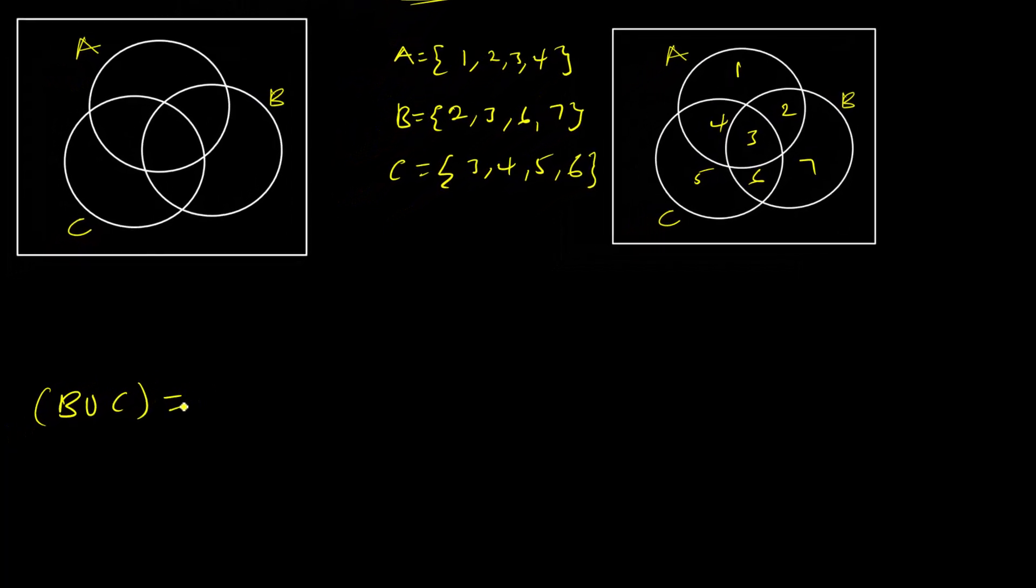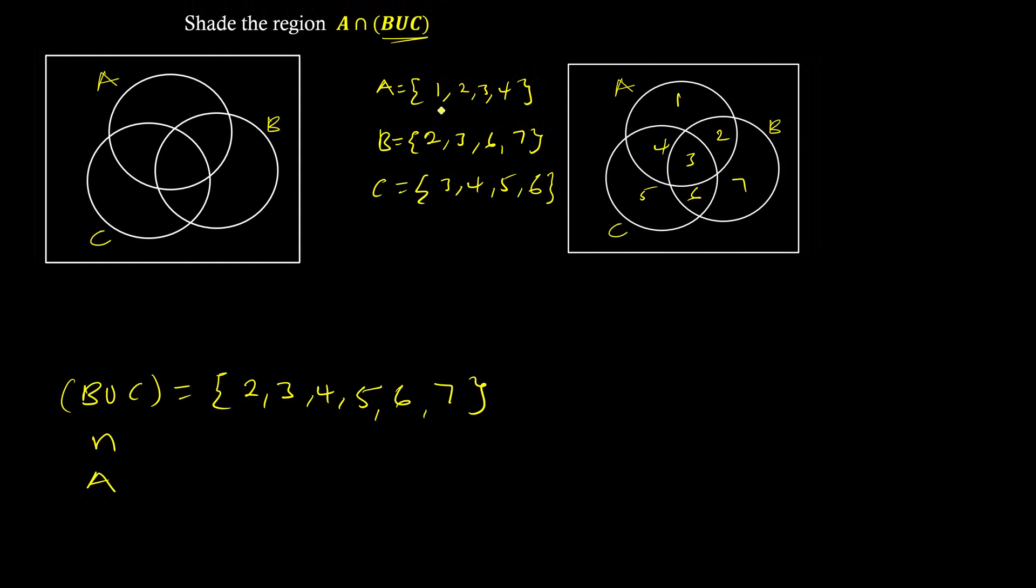B union C is just combination of B and C, so we are going to add. Let's start with B and C. We have two here, two. We have three here, three there - I'll pick one. We have four, four, five, five, six, six, then seven, seven. That is B union C.